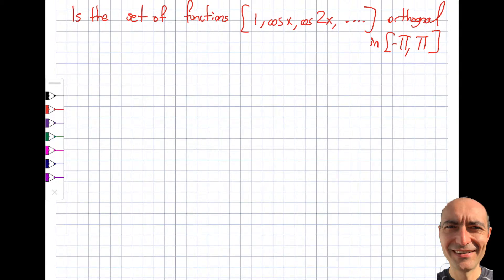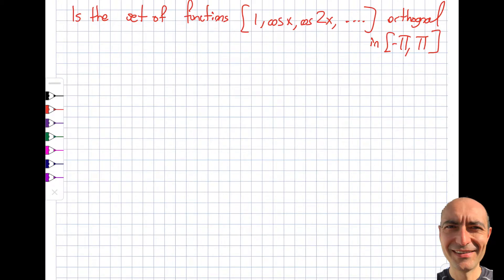One thing I want to highlight: the function 1 is a kind of deal-breaker because the rest of them follow the pattern cosine of nx. You can put n equal to 0, but that changes things. So I want to do a two-case treatment. Case one: one of the functions is 1 and the rest is cosine of nx. Case two: cosine of nx versus cosine of mx — whether those two are orthogonal.